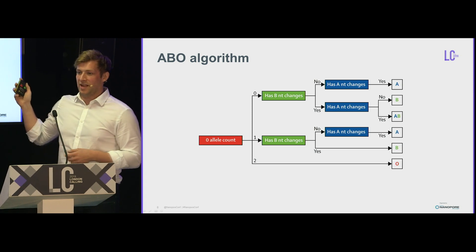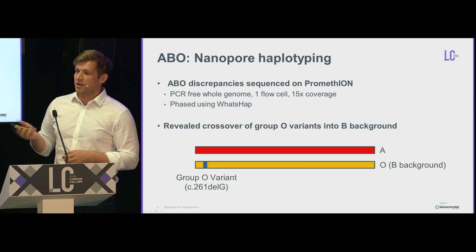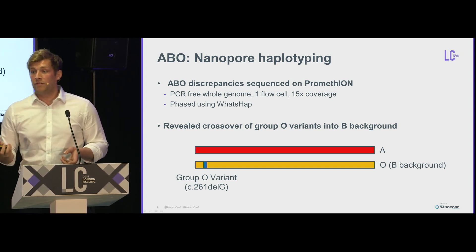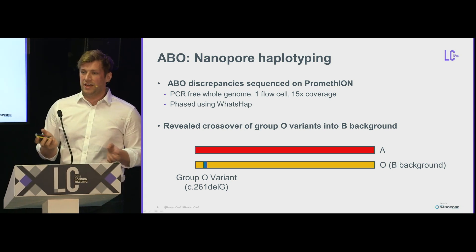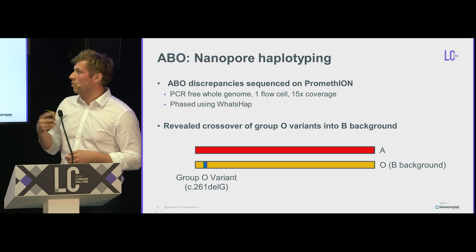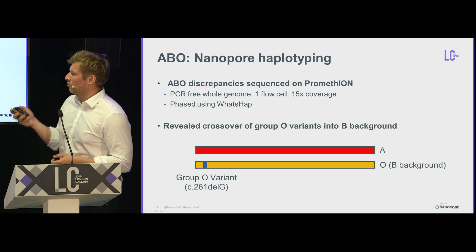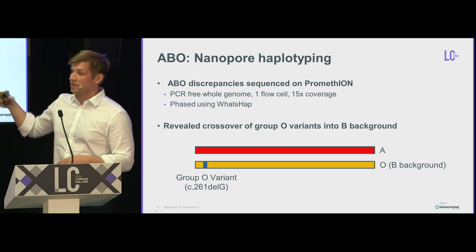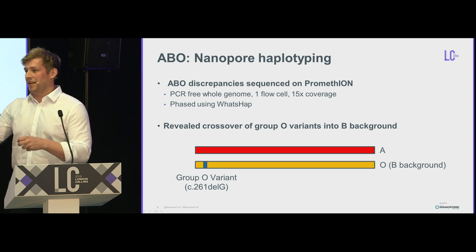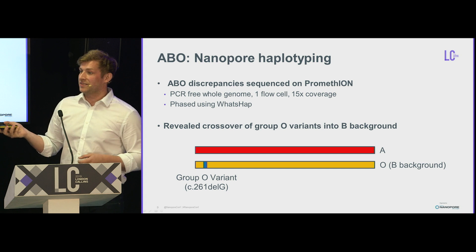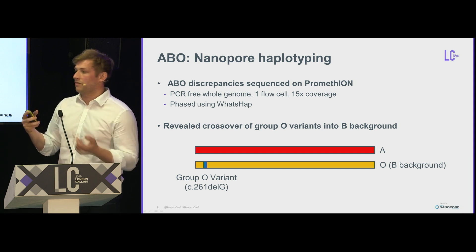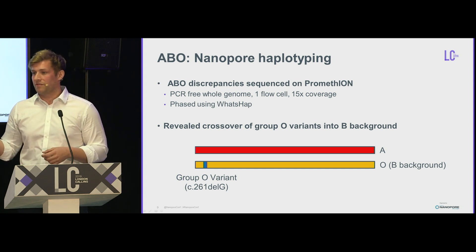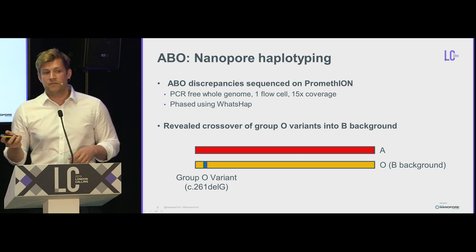We had these errors in ABO, so we referred them to Nanopore sequencing — PCR-free whole genome on the PromethION, one flow cell per sample, getting about 15x whole genome coverage. Sequencing these discrepancies revealed a crossover of group O variants into the B background. The algorithm had assumed O variants come with blood group A, but this was not the case for these samples — there had been a rare crossover event of this allele that we hadn't observed before and hadn't accounted for in the blood typer.